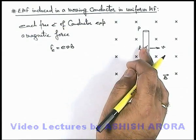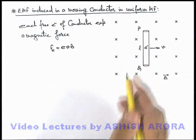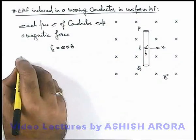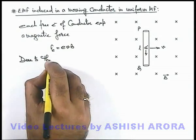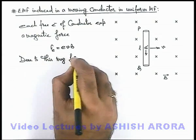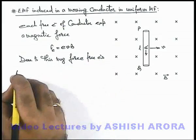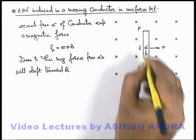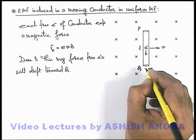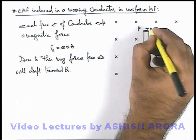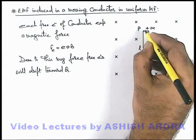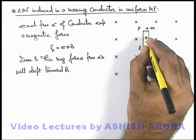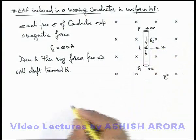By the right-hand palm rule, the direction of this magnetic force on the electron, being a negative charge, will be in the downward direction. So due to this magnetic force, free electrons will drift toward end Q of the rod. End Q will become slightly negative, and as electrons are shifted from point P, it will become slightly positive. Due to these charges occurring by the drift of electrons, an electric field is established in the conductor in the downward direction, which can be written as an induced electric field.